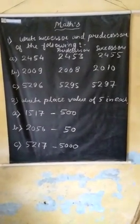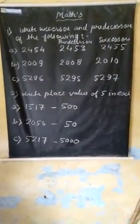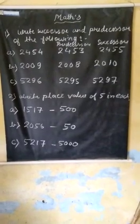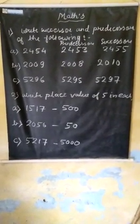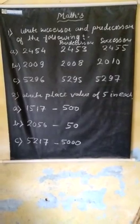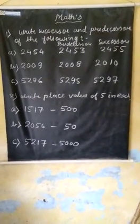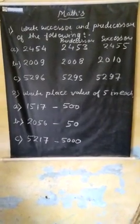Here, the given number is 2454. Find the predecessor. We subtract one from four, it will be 2453. And when we add one, it will be 2455.